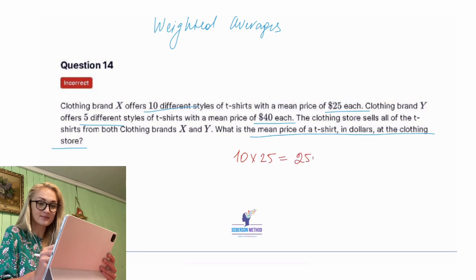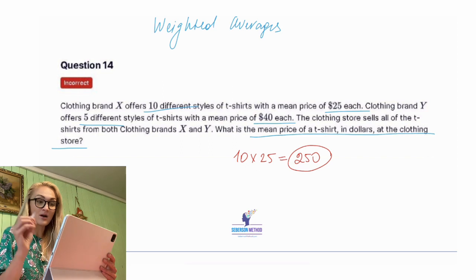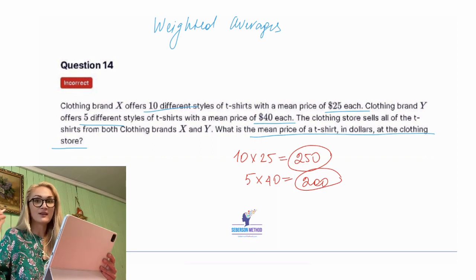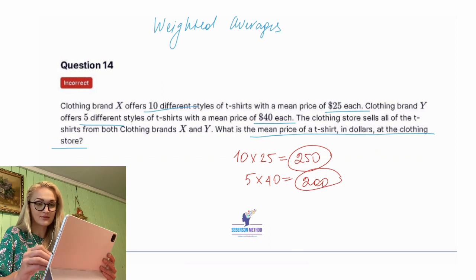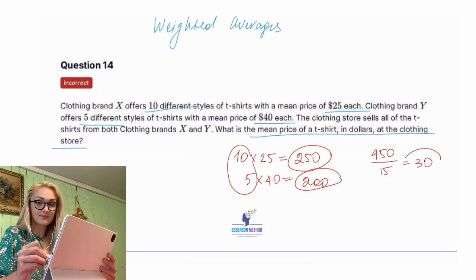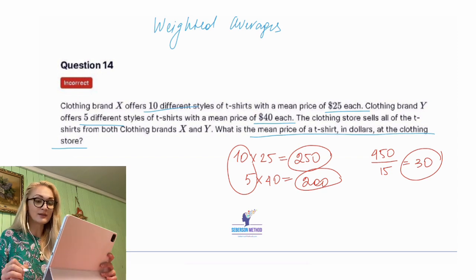I would say 10 times 25 — that gives me 250, the total sum of all 10 different styles of brand X. And then 5 times 40 gives me the total sum of all items from brand Y. Now to find the average, we add them: 450. And I'm going to divide 450 by 10 plus 5, which is 15. That would be 30 — my average using the weighted averages technique.